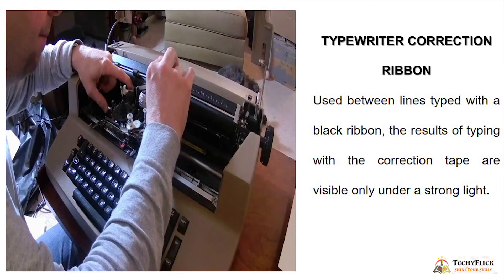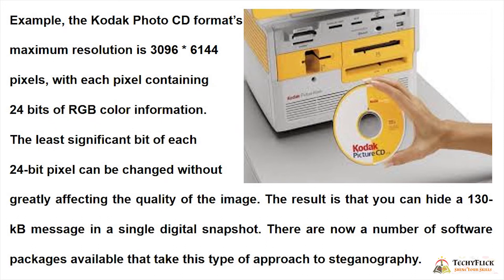Typewriter correction ribbon is used between lines typed with a black ribbon. The results of typing with a correction tape are visible only under a strong light. For a digital example, the Kodak Photo CD format's maximum resolution is 3096 x 6144 pixels, with each pixel containing 24 bits of RGB color. The least significant bit of each 24-bit pixel can be changed without greatly affecting image quality, allowing a 130 KB message to be hidden in a single digital snapshot. There are now many software packages that take this type of approach to steganography.